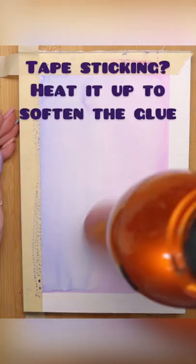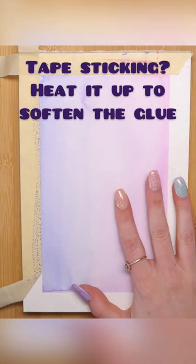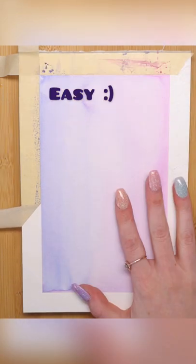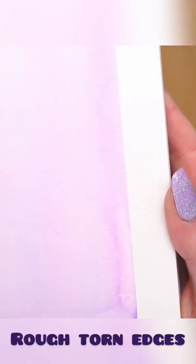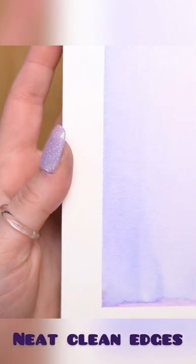And go nice and slow. If your tape really won't come up, then you can use a hair dryer to soften up the glue and it makes it really easy. And those are my tips for how you can create a neat edge instead of a rough torn edge with your tape.